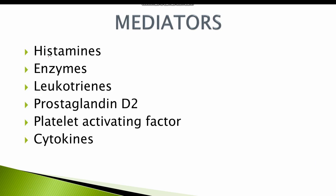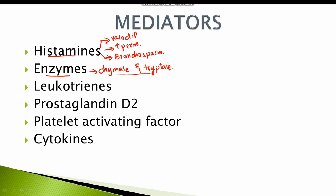The mediators released by the mast cells include histamines, which result in vasodilation and increased permeability of blood vessels. They also result in constriction of the bronchiolar muscles causing bronchospasm. The enzymes produced by the mast cells include chymase and tryptase, which cause damage to the epithelial cells. There is also production of leukotrienes, which include C4 and D4 leukotrienes. These C4 and D4 leukotrienes are much more potent than histamines and result in vasodilation, increased permeability of blood vessels, and bronchospasm.